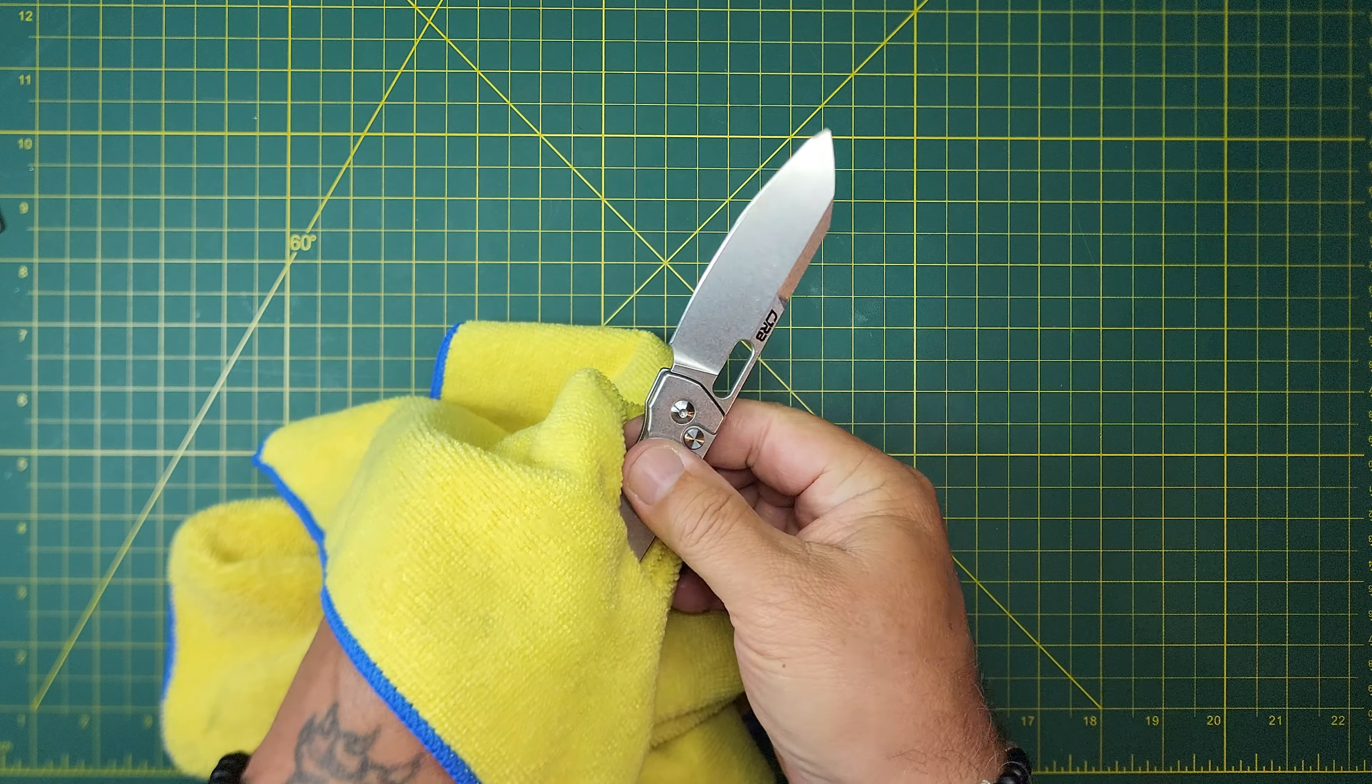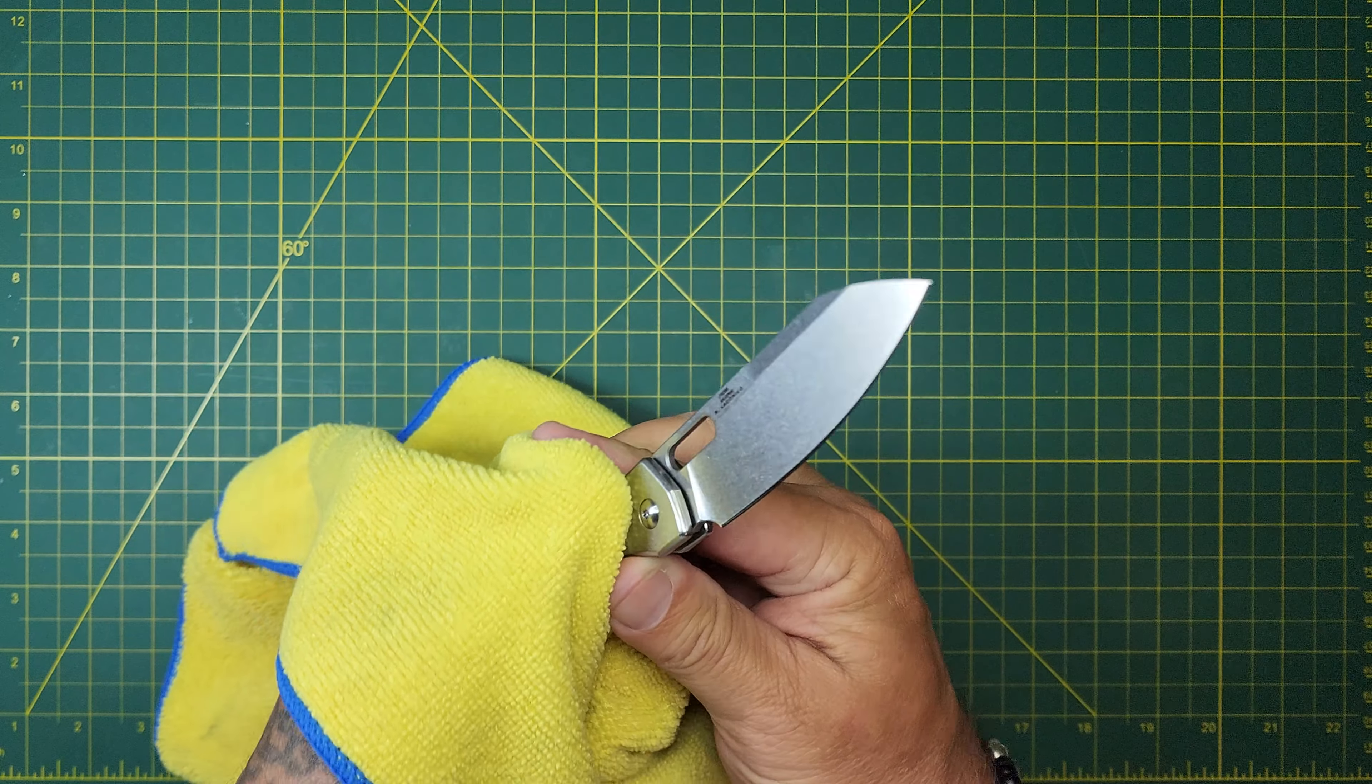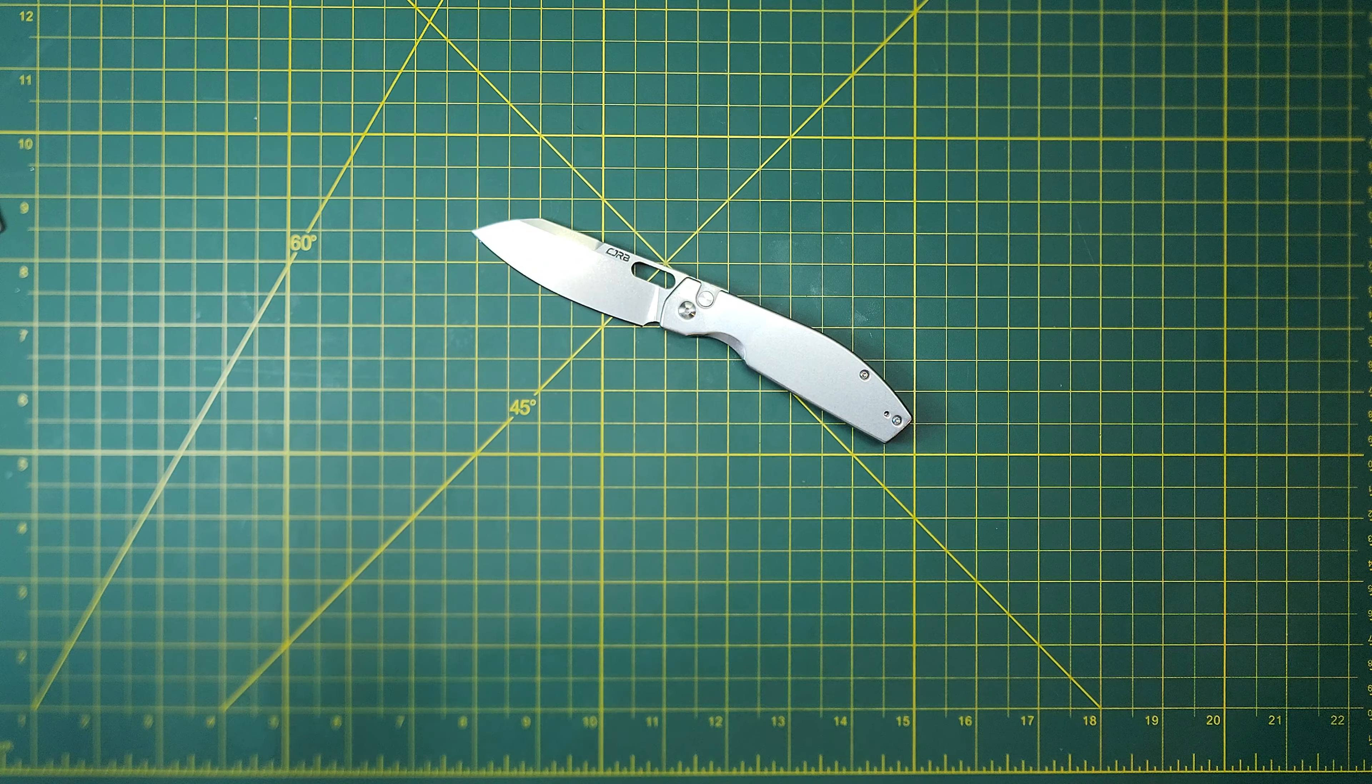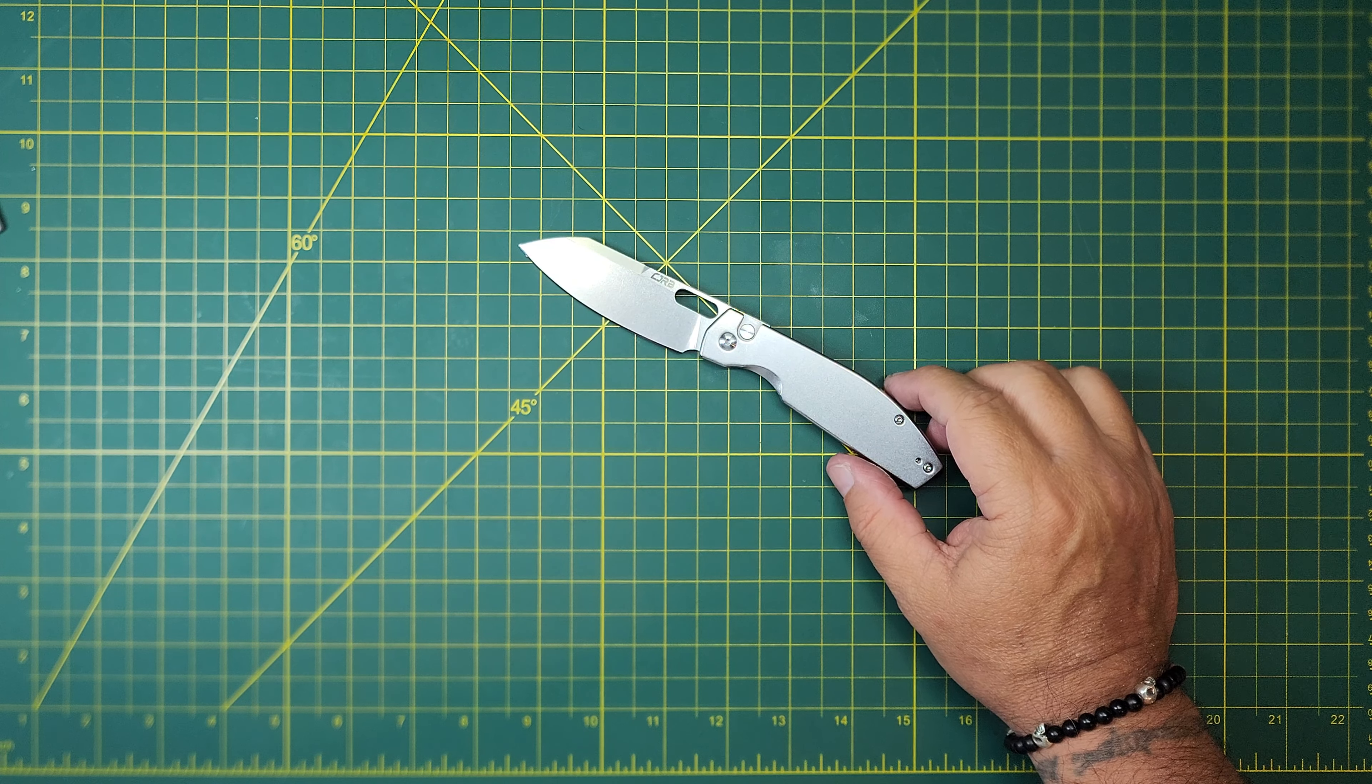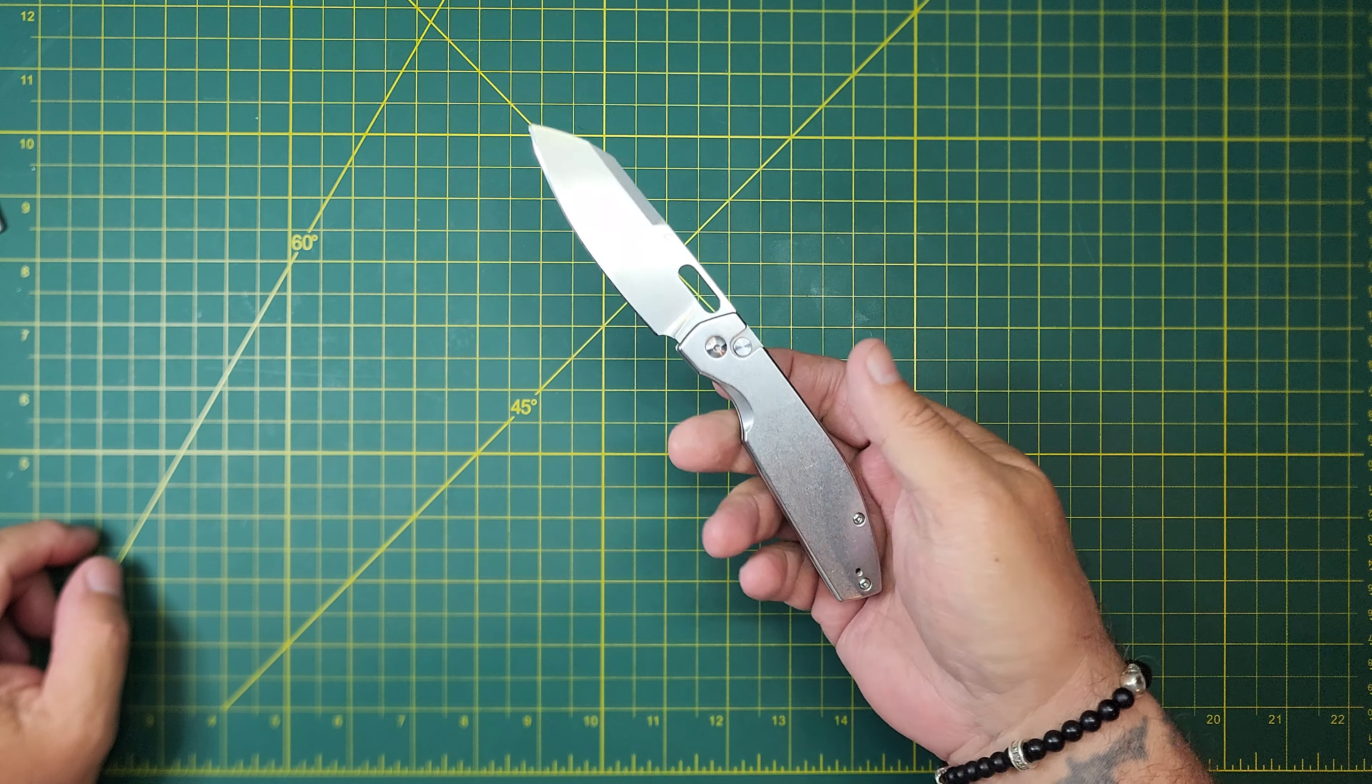It's got better corrosion resistance, but it's not quite as hard. I don't know, man, you're going to have to make up your own mind on that stuff. I don't have a D2 knife that's corroded, and I don't know that what I'm using my D2 knives for, a little difference in the hardness makes a difference.